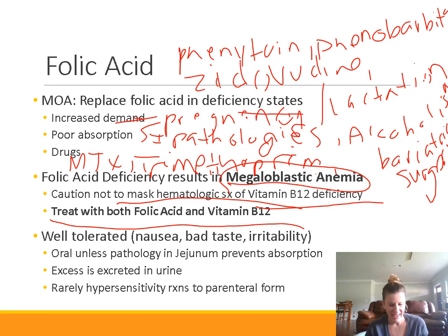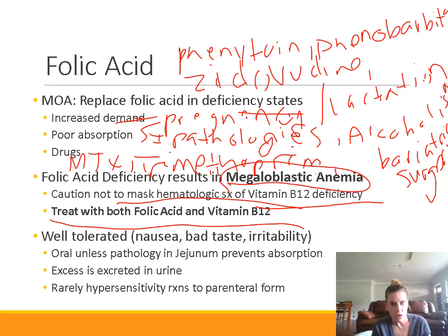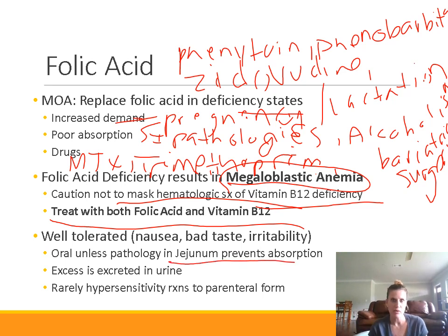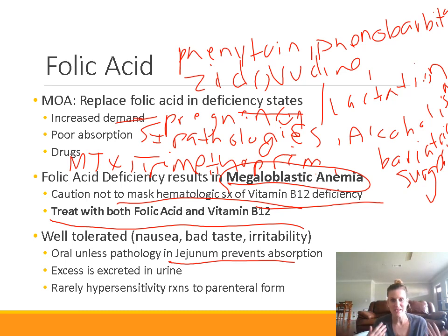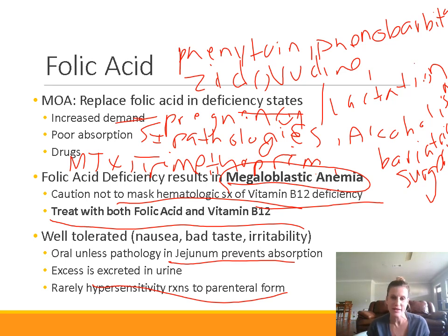Folic acid is really well tolerated. It can cause some nausea, bad taste, and irritability, but patients typically take it and don't notice a thing except that the anemia gets better. We almost always give oral formulations of folic acid; parenteral formulations are available but typically oral works fine. We give parenteral formulations if there's some sort of pathology in the small intestine — if they can't absorb it through the jejunum. We're not really worried about overdose because the excess just gets excreted in the urine — it's water soluble so it doesn't build up. Rarely, there are hypersensitivity reactions to the parenteral form, but that's very rare.